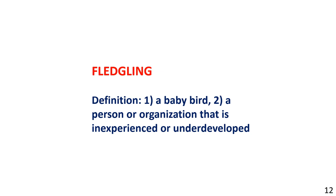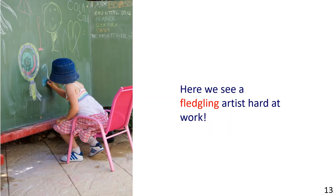Fledgling — definition: a person or organization that is inexperienced or underdeveloped. The picture shows a little girl drawing on a board. Sentence example: Here we see a fledgling artist, hard at work.